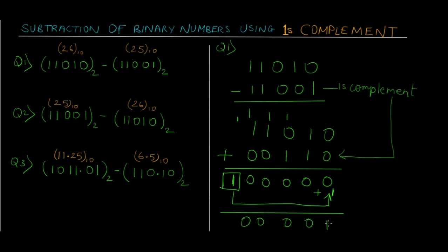Adding the carry to the result gives us a final answer of 00001 — which is one. You can cross-check by converting: 26 minus 25 always gives one, and that is exactly what we got. So when we get a carry, we add it to the result and the answer is a positive number.